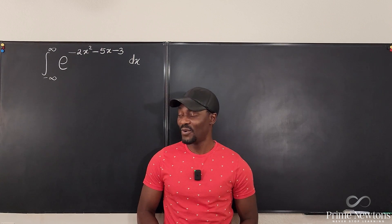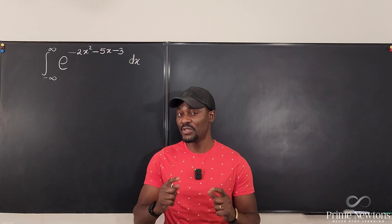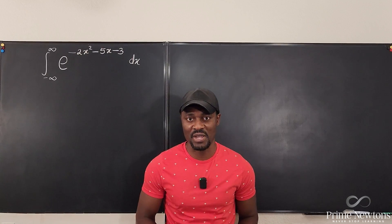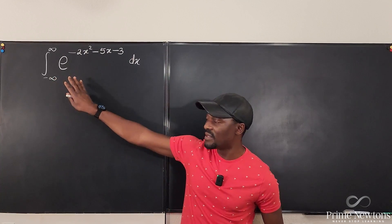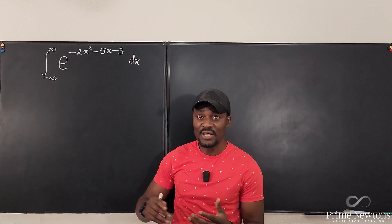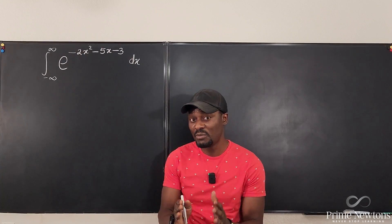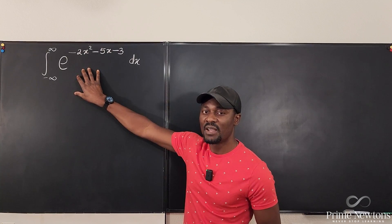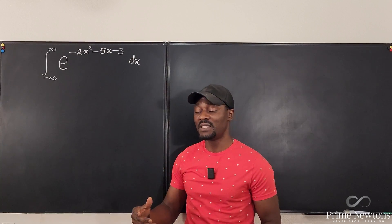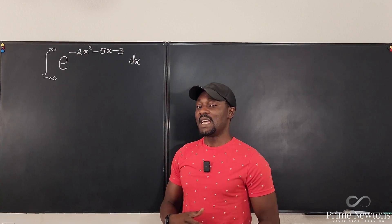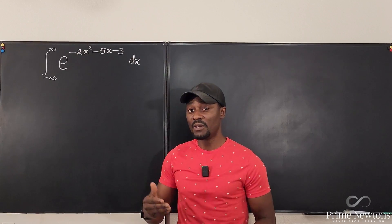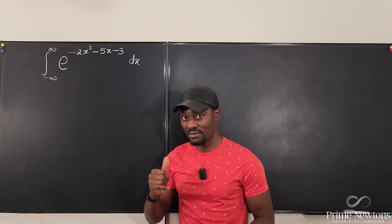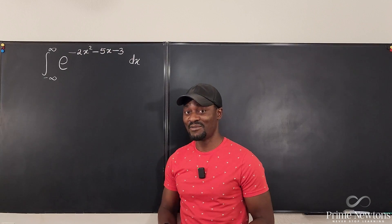Welcome to another video. We are going to use completing the square — something you learned in Algebra 2 or Pre-Calculus — to deal with this integral. There is no way to split this into pieces as it stands, so we'll use completing the square to make some wonderful outcomes. This is one of those MIT integration problems, and sometimes they are easier than they look depending on how you think. If you think right, you'll get it right.